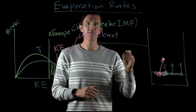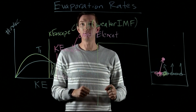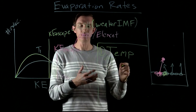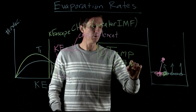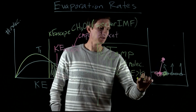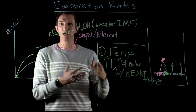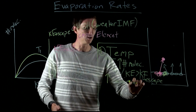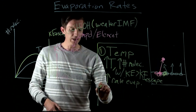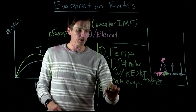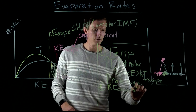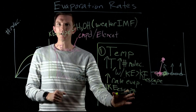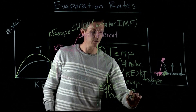To summarize the factors that affect evaporation rate: the first factor is temperature. Increasing the temperature of a system increases the number of molecules with a kinetic energy greater than the escape kinetic energy, which increases the evaporation rate. Additionally, when comparing two different compounds, a lower escape kinetic energy — like methanol versus water — will also increase the evaporation rate.